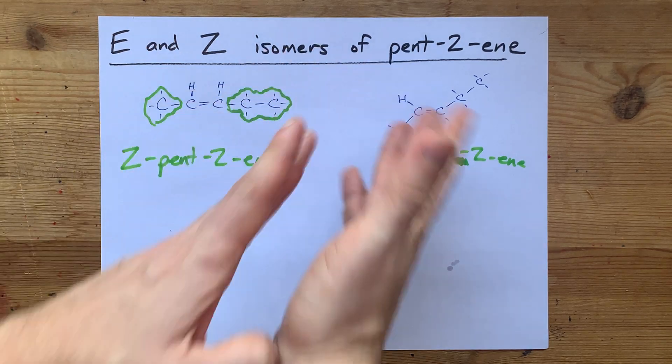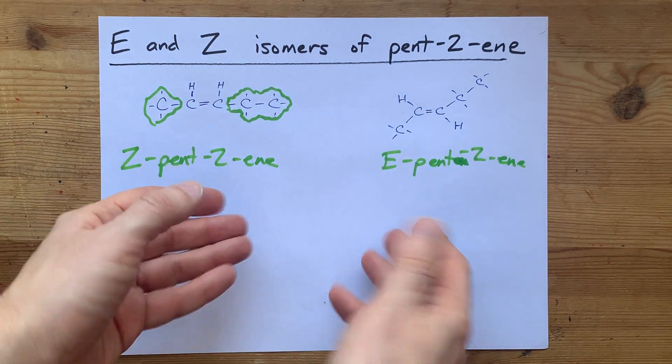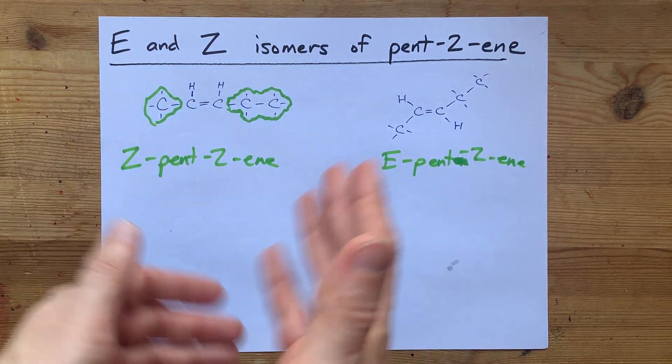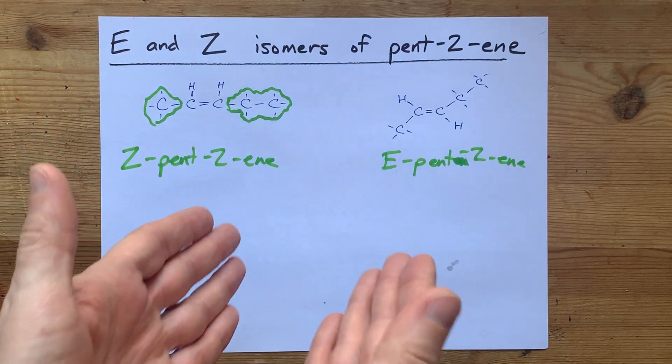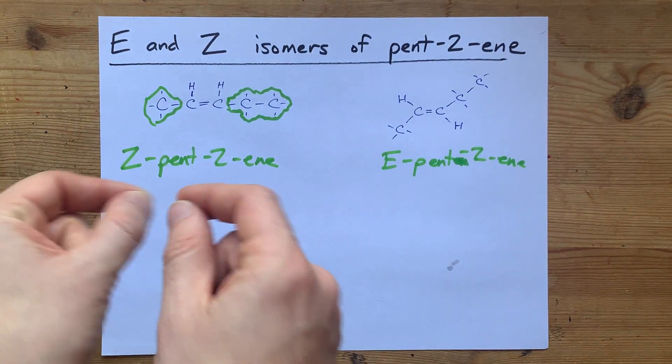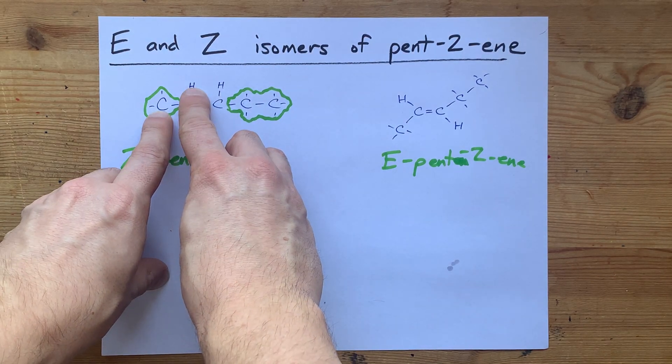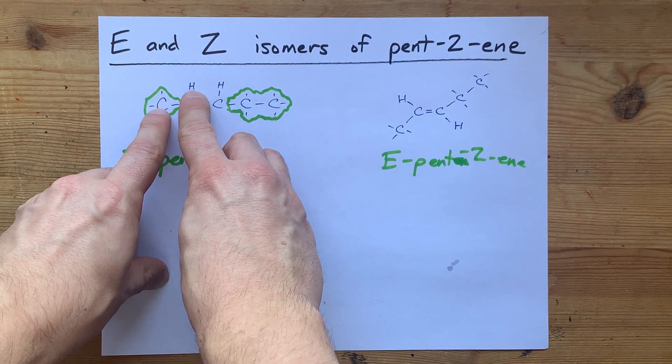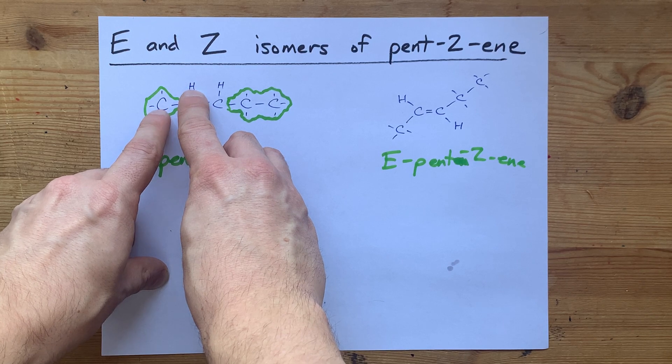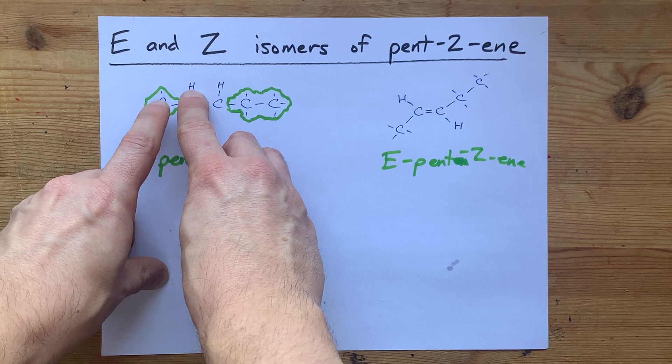In order to label E and Z isomers, I recommend just drawing what you are familiar with as the cis and trans isomers, and it doesn't matter which is which. You have to use the Cahn-Ingold-Prelog rules where you branch out one atom at a time, compare their atomic masses, and if they are different, the higher atomic mass is the higher priority.